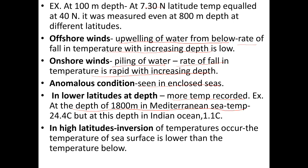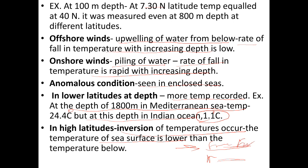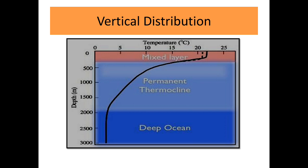Anomalous conditions are also seen in enclosed seas at lower latitudes — at depth, more temperature is recorded. For example, at a depth of 1800 meters in the Mediterranean Sea, temperature is 24.4 degrees Celsius, but at the same depth in the Indian Ocean it is just 1.1 degrees Celsius. In high latitudes, inversion of temperature occurs — the temperature of the sea surface is lower, at or near freezing point, while the temperature below the surface is higher, so water still exists below the ice.